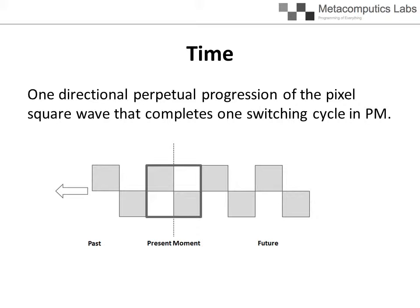Time is thus defined as one directional perpetual progression of the pixel square wave that completes one switching cycle in present moment.